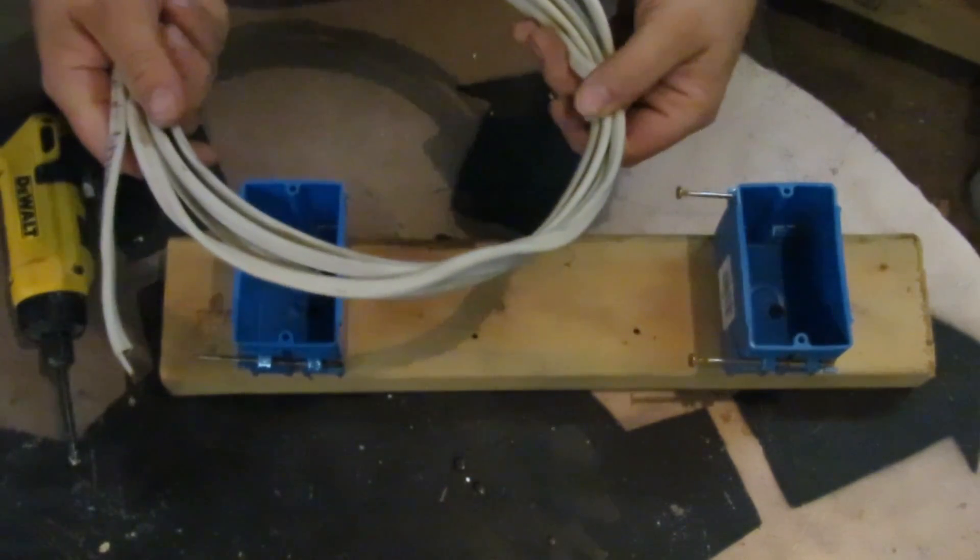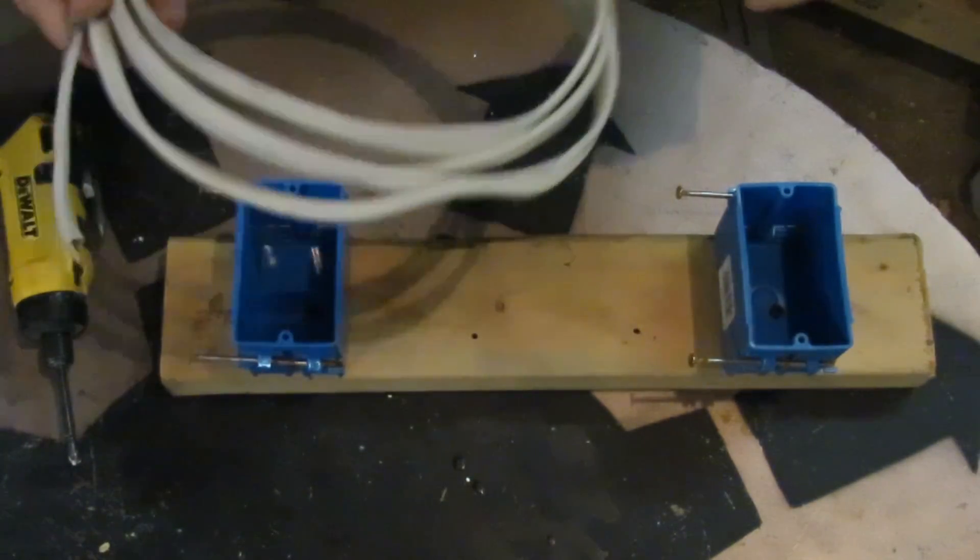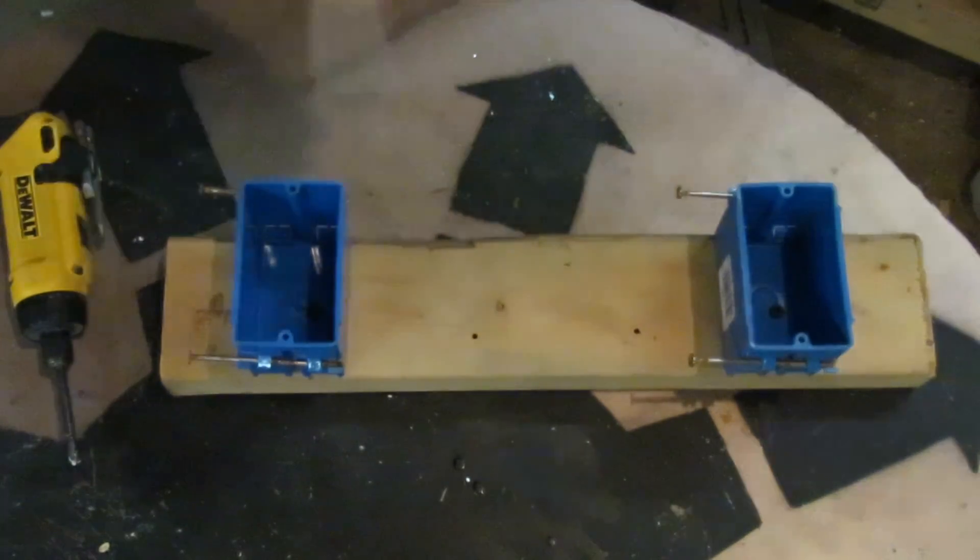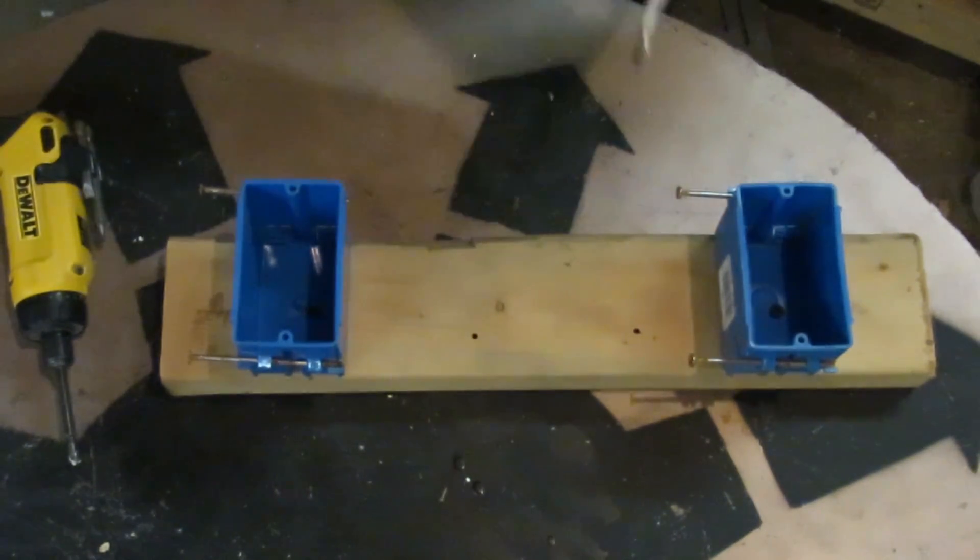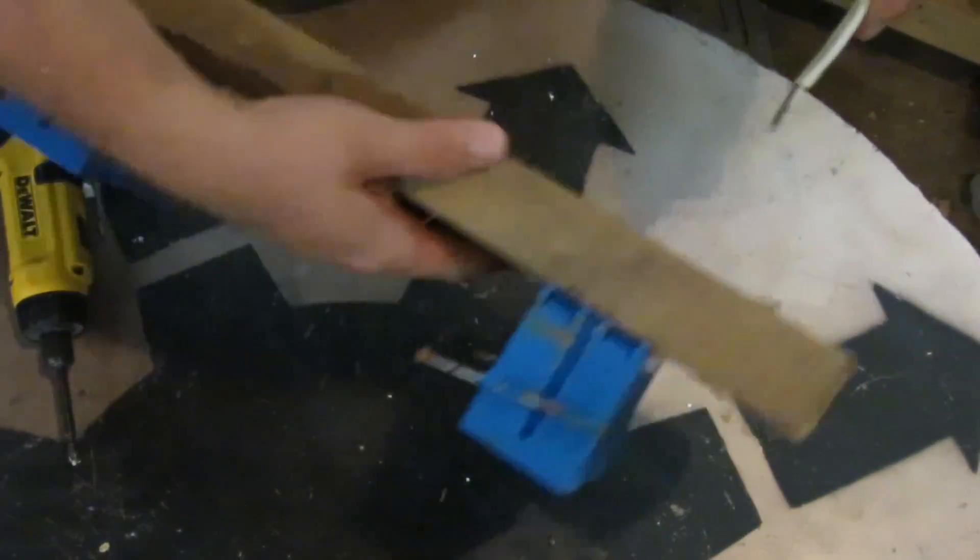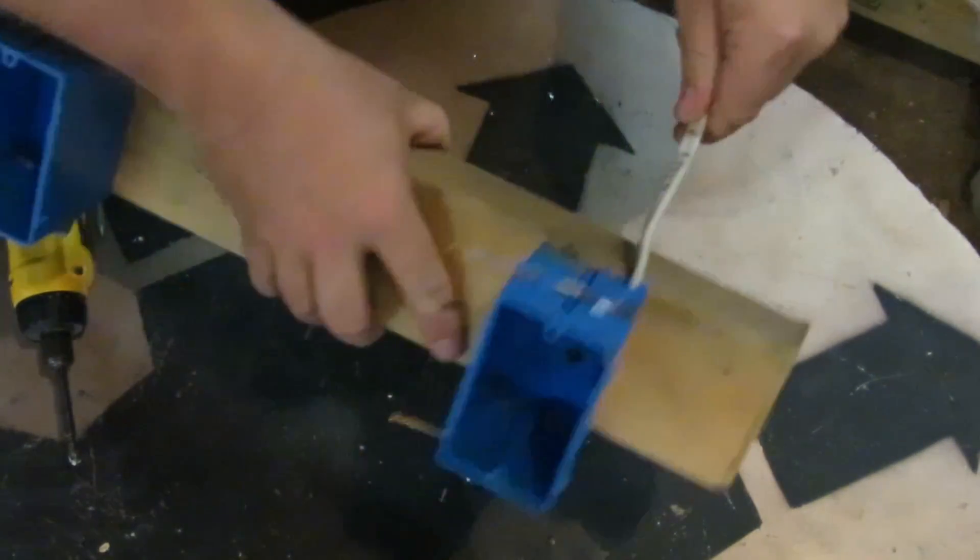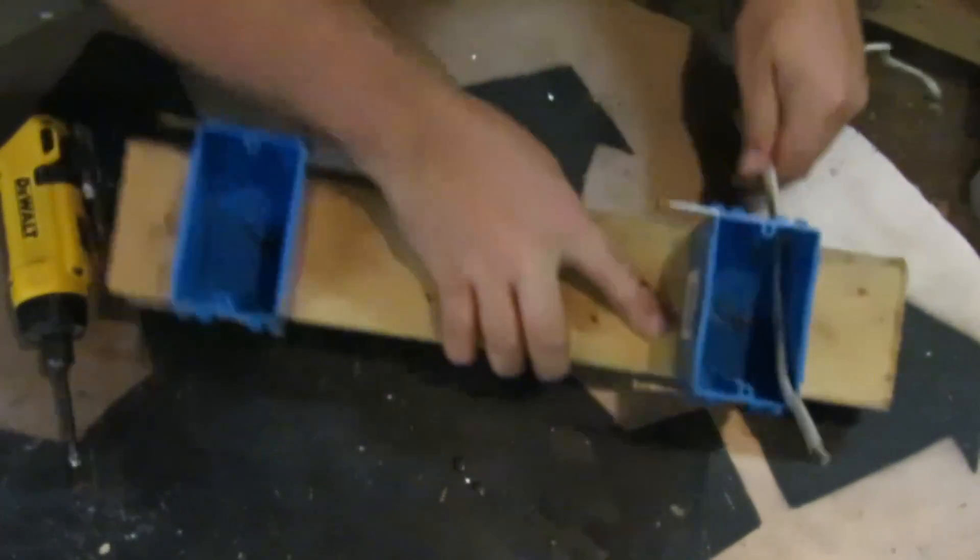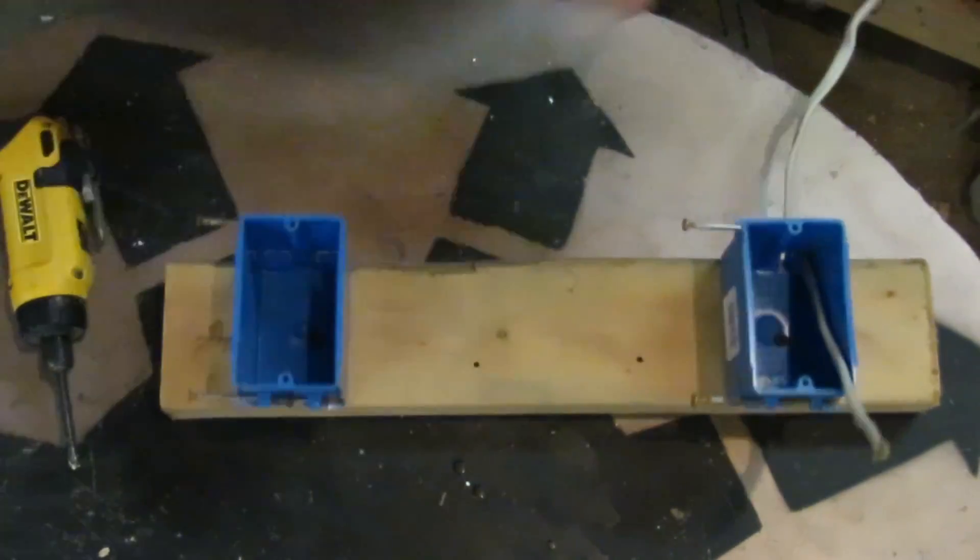For this demonstration I'm going to use 14-2 wire and I just have the boxes screwed onto the 2x4 to secure them in place, and I'm going to put two wires in one box and one wire in the other box.